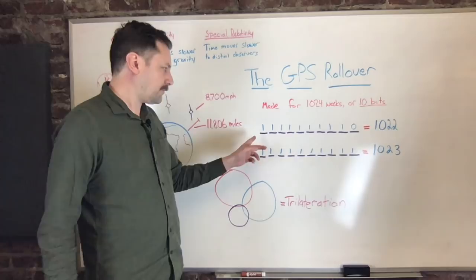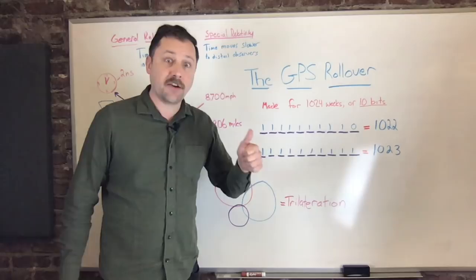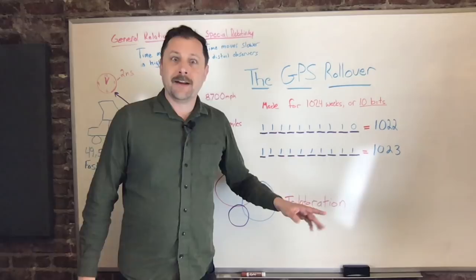And ultimately, what happens is, okay, 1022, we have a 0 at the end here. We can increment one more. So when we go to 1023, all we have is all 1s. Uh-oh, what do we do when we hit week 1024?